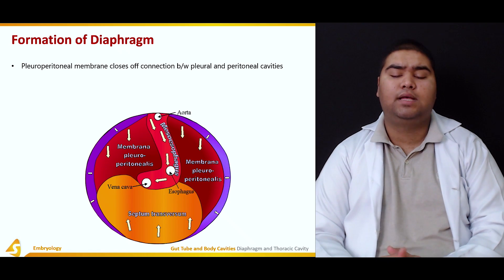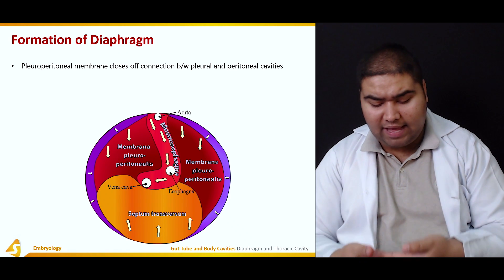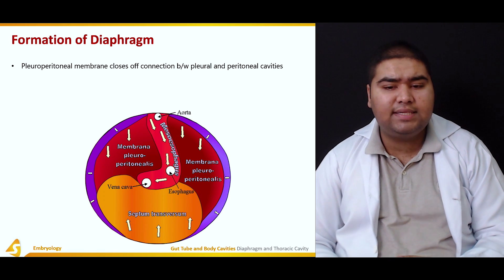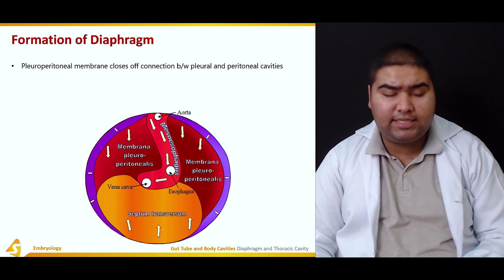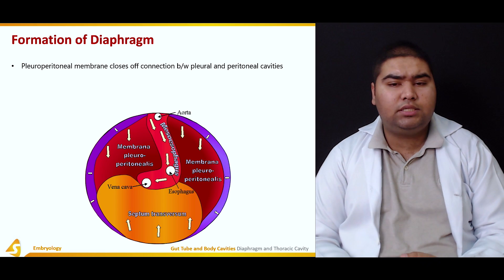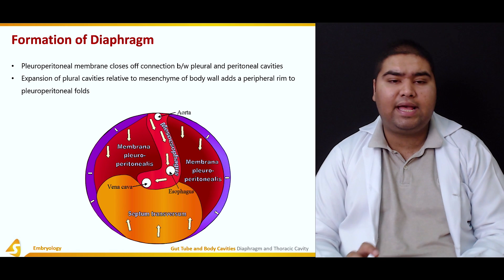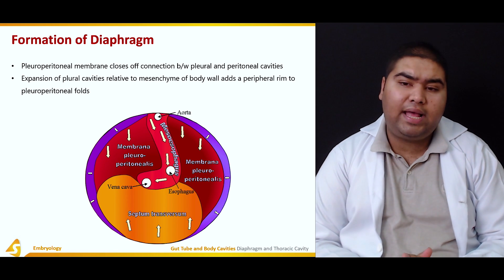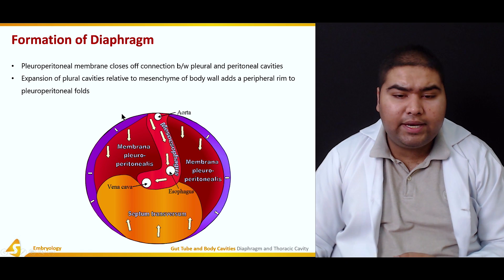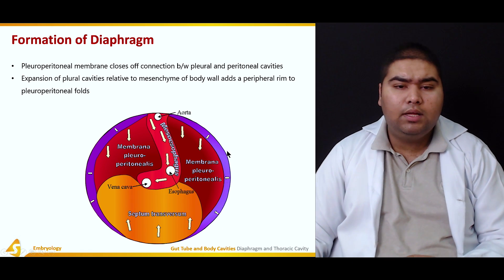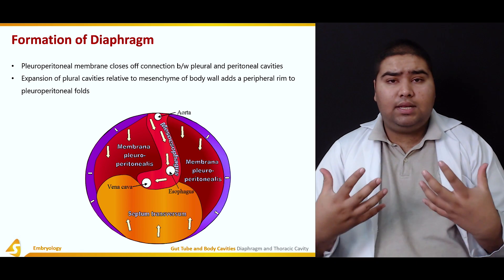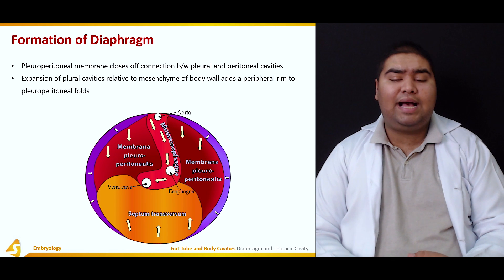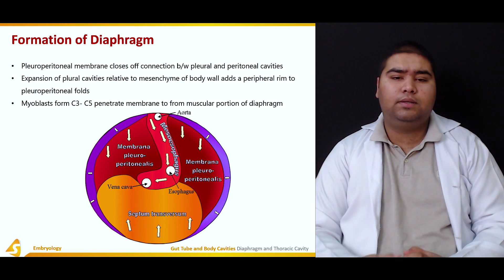The esophagus lies in the midline, and the fusion of the pleuro-peritoneal membrane with the developing esophagus and septum transversum causes it to close off the connection between the pleural and peritoneal cavities. The expansion of the pleural cavity relative to the mesenchyme of the body wall adds a peripheral rim to the pleuro-peritoneal fold — this is because the lungs are growing at a very rapid rate compared to the mesenchyme of the body wall.